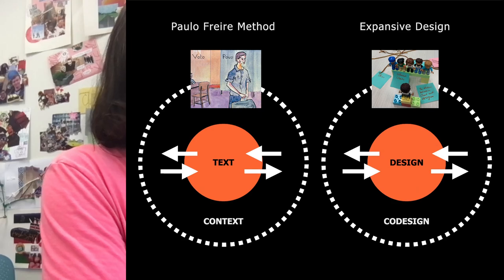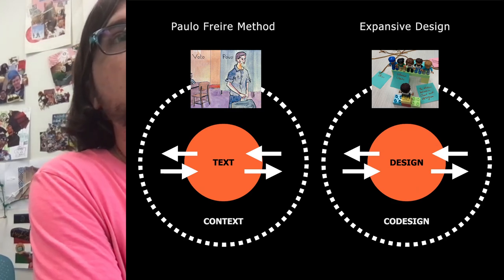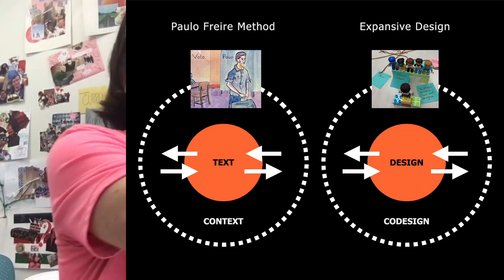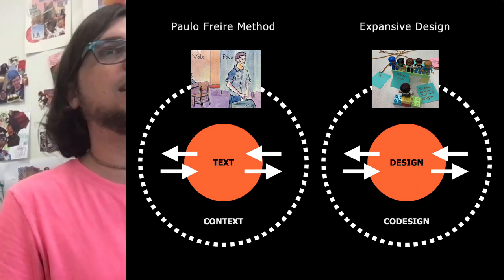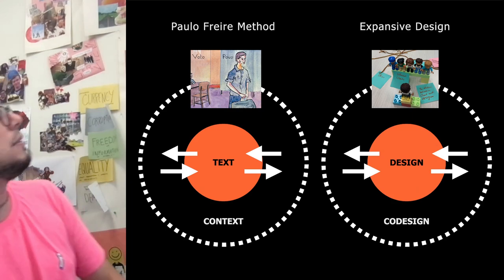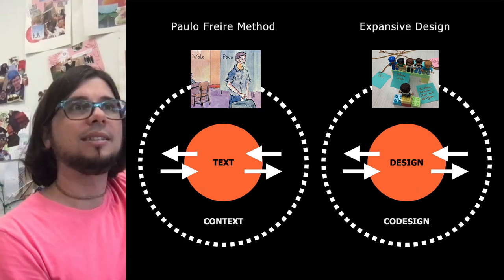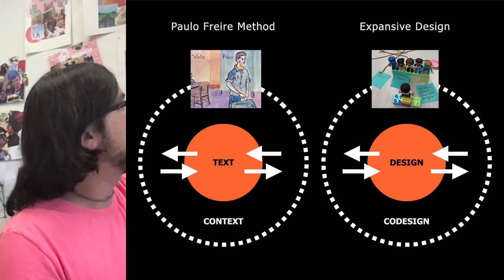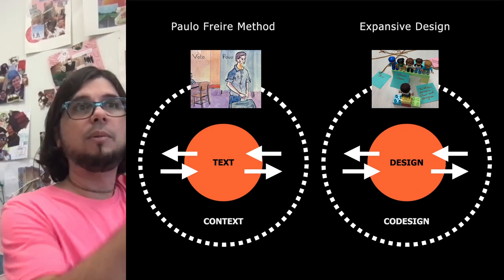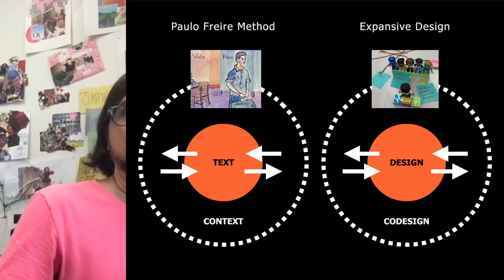He writes right on the first page: 'The understanding attained by critical reading of a text implies perceiving the relationship between text and context.' This is a graphical representation of the Paulo Freire method — you have a text, but before you read the text you read the context, and you go back and forth. There is this two-way movement between reading the text and the context, and sometimes images serve as a bridge between text and context.